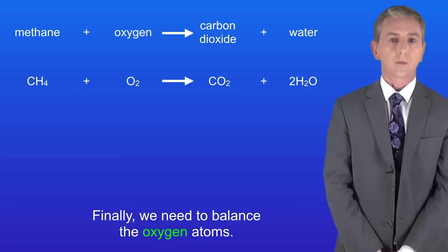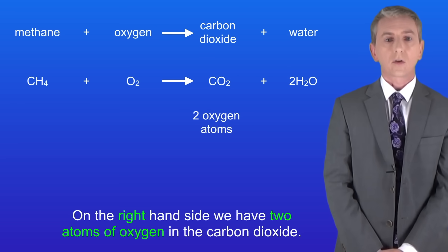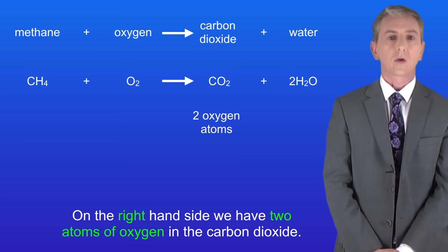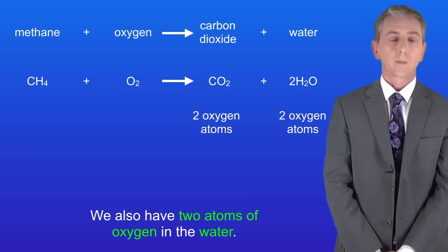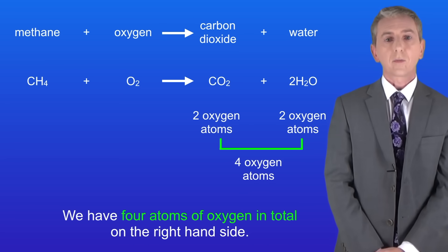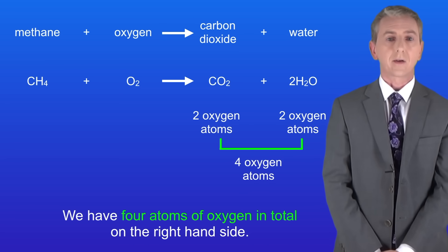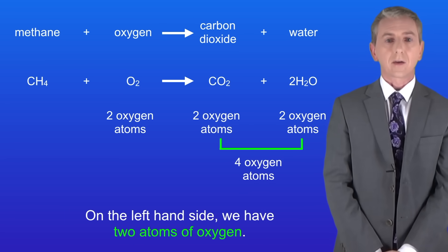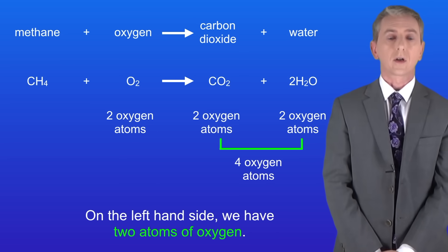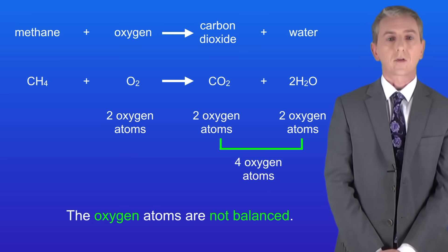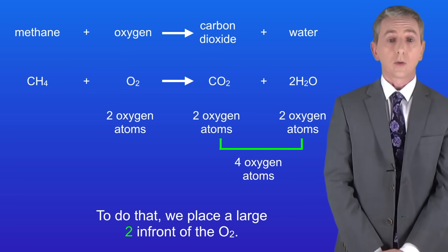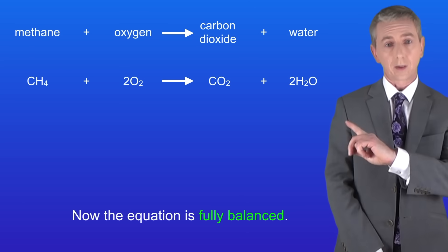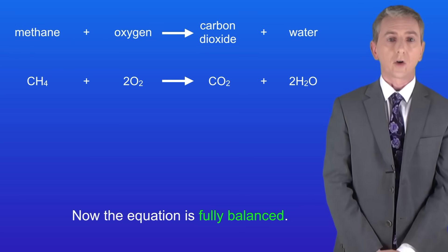Finally we need to balance the oxygen atoms. On the right hand side we've got two atoms of oxygen in the carbon dioxide and two atoms of oxygen in the water, giving four atoms of oxygen in total on the right hand side. On the left hand side we've got two atoms of oxygen, so the oxygen atoms are not balanced. We need to get four oxygen atoms on the left hand side, so we place a large two in front of the O₂. And now the equation is fully balanced.